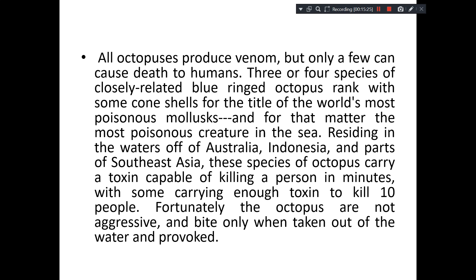These species are especially found residing in the waters of Australia, Indonesia, and parts of South East Asia. These species of octopus can carry poison sufficient to kill a human being in minutes — some carry enough toxins to kill ten people. Fortunately, these octopus are not aggressive and do not go and bite unless they are taken out of water or provoked.